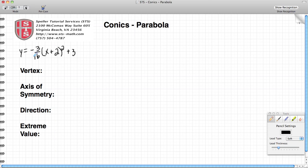y equals negative 3 sixteenths times the quantity (x plus 2) squared plus 3. We're going to go ahead and subtract 3 from both sides to put this formula into a form that more closely matches standard form.